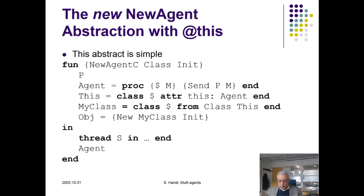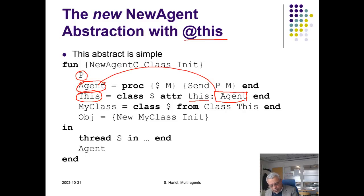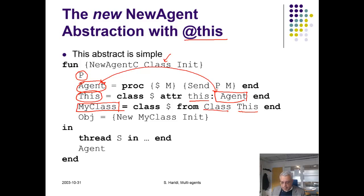Once we have the agent identity, it can be accessed via `@this` — this is just a convention. We can then send a message to the agent as usual. In the new abstraction, `p` is a port, the agent is a procedure, and `this` is a class with one attribute also called `this` that stores a reference to the agent. The new class is created by augmenting the original class with this locally defined class, so every agent object has an extra `this` attribute storing its agent reference.